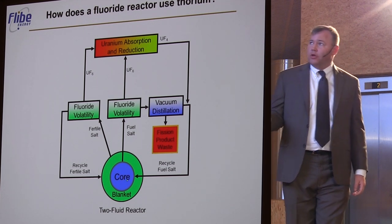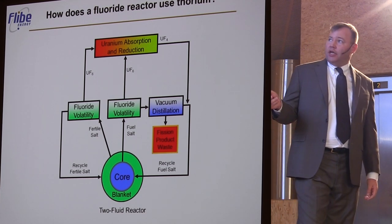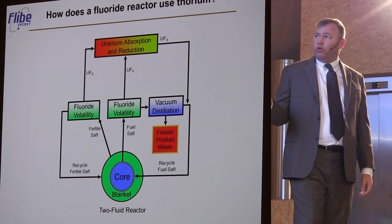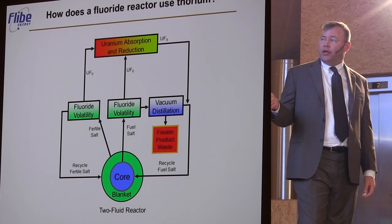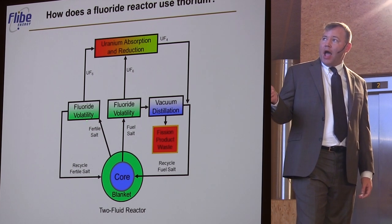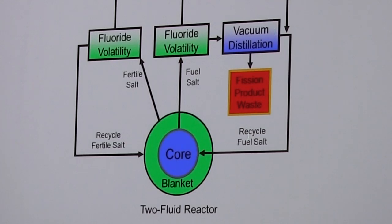With the two-fluid reactor, it is a rather straightforward thing to move the fuel that has been bred in the blanket out of the blanket and get it back into the core, which is where you want it. You want it in the core salt.